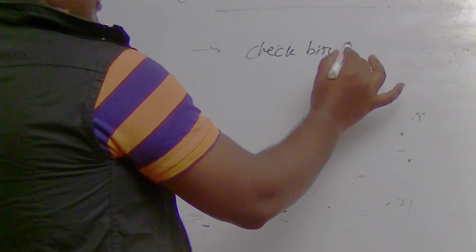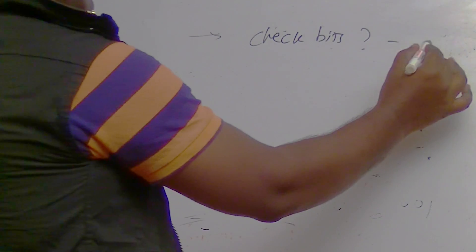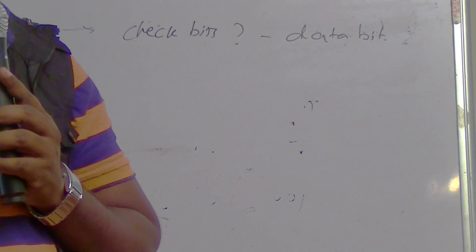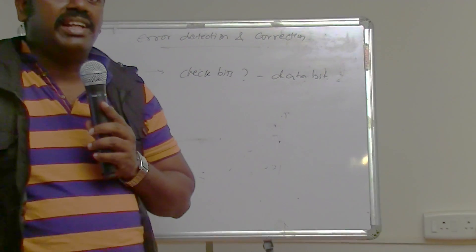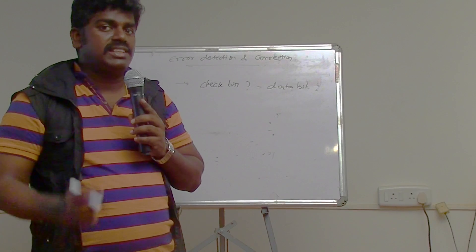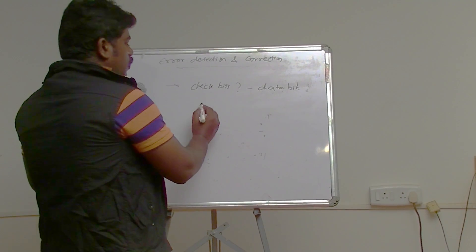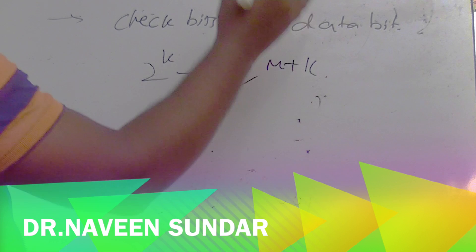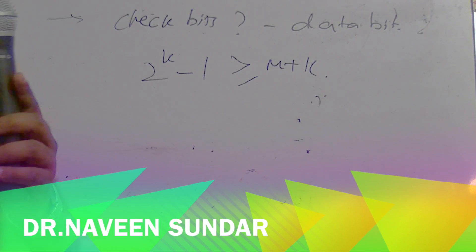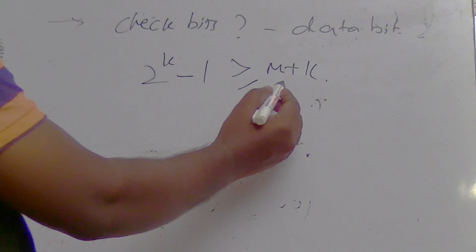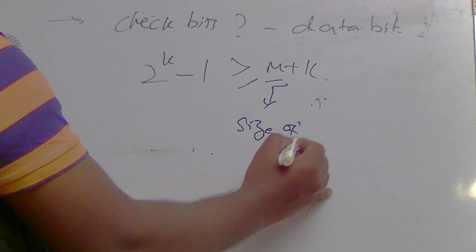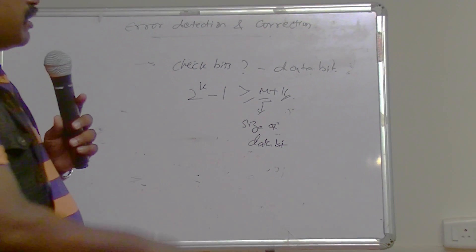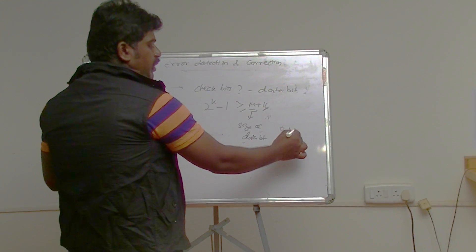How many check bits are required for a given number of data bits? We use the formula: 2^k − 1 ≥ m + k, where m is the size of the data bits and k is the number of check bits we need to find. We substitute k = 0, 1, 2, ... until this condition is satisfied.